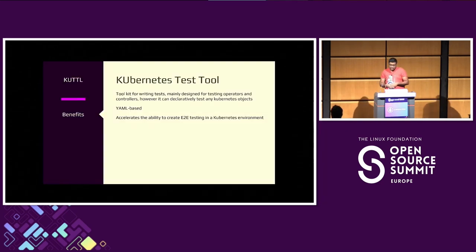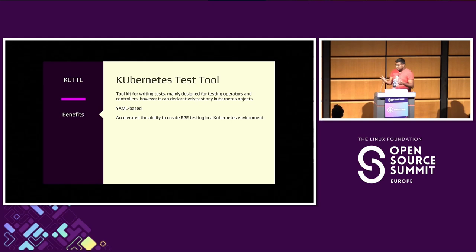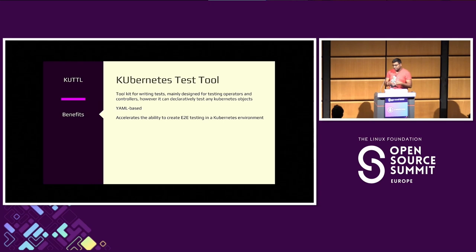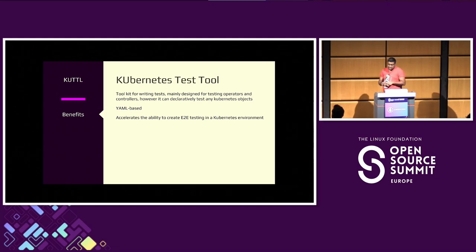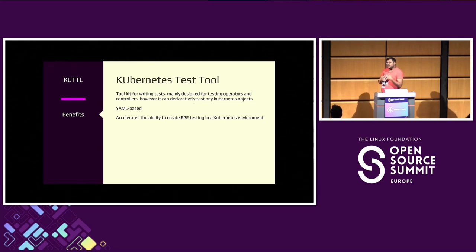Quick history: Cuttle is primarily a toolkit for writing tests, designed for testing operators, and can declaratively test any Kubernetes objects. It's YAML-based — you don't need to learn any specific new language. Whether you're a Java, Go, or Python developer, you can still use YAML-based structure. And it accelerates the ability to create an end-to-end environment to test those applications.